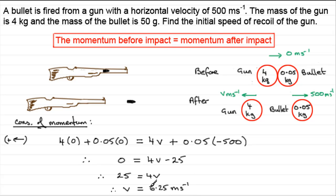So that is our speed of recoil. The gun moves backwards at 6.25 meters per second. Well, I hope that's given you some idea then of how to set up and answer questions where you've got a bullet being fired from a gun.